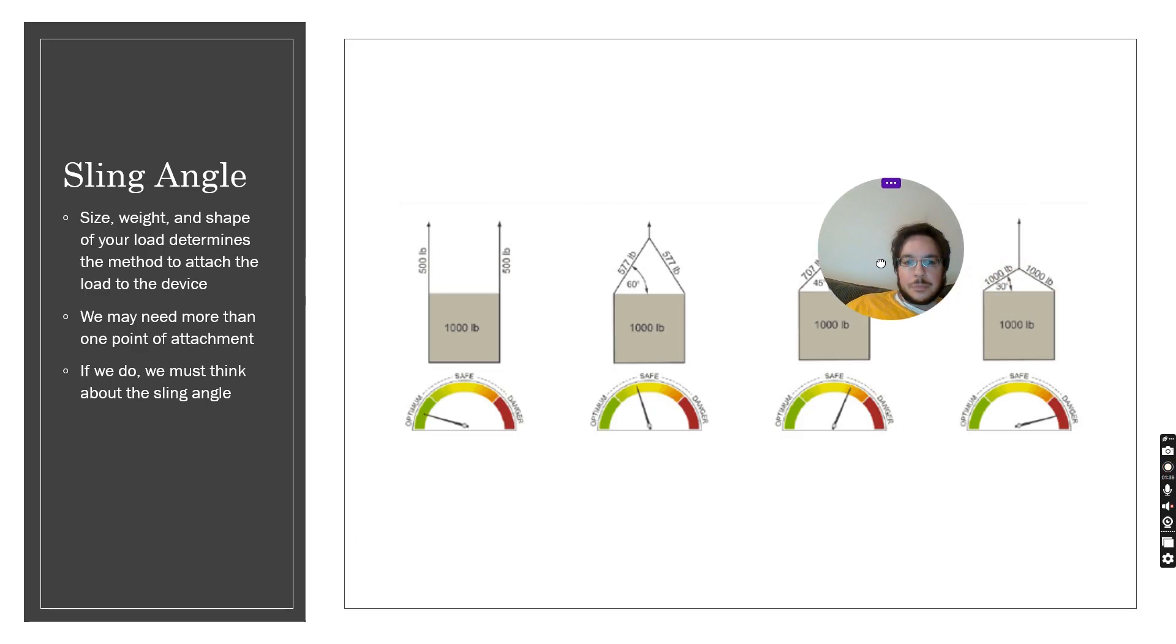When we are lifting we have to go back to physics and think about the angle of the lift. In this case imagine we have a box or a beam or something that weighs a thousand pounds and we're lifting it straight up. In the case on the left here we've got a sling with two sides and so each side is approximately 500 pounds.